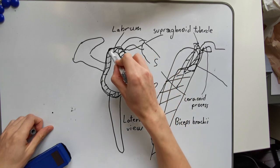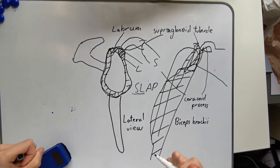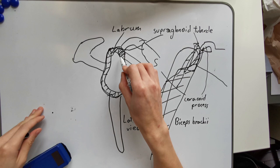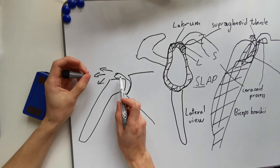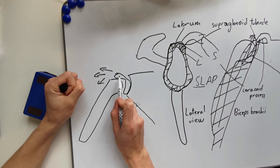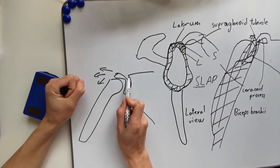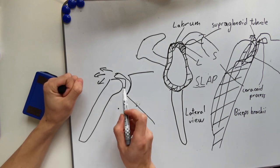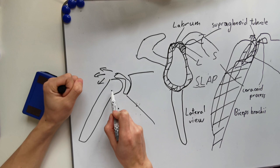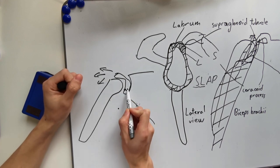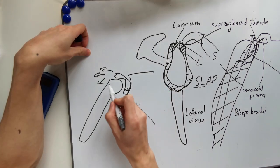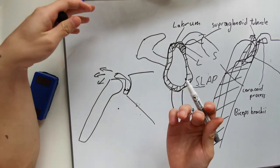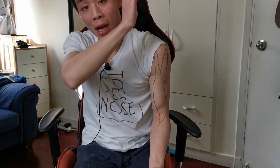The superior labrum refers to the top part of the labrum; anterior to posterior refers to the region of the labrum on either side of where the long head of the bicep inserts. This whole region is damaged or weakened due to many different causes, producing irritation and pain. When the superior end of the labrum is under too much stress it can potentially detach from the glenoid surface, which increases the instability of the scapulohumeral joint significantly, because the depth once provided by the labrum no longer exists.